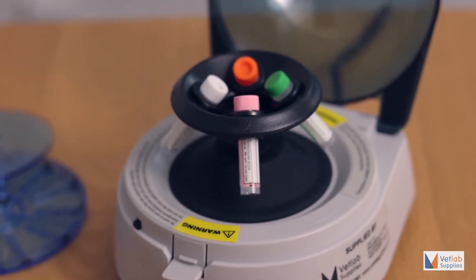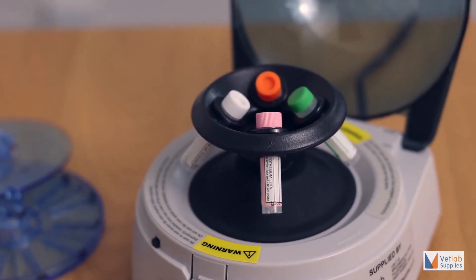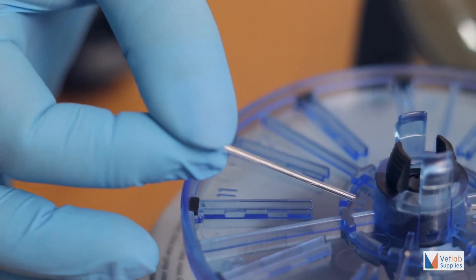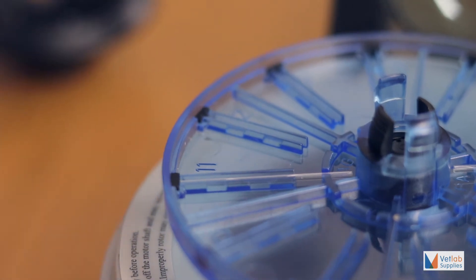A variety of capped plastic blood tubes can be accommodated from 0.5 to 2 millilitres, as well as 40 millimetre micro hematocrit capillary tubes.